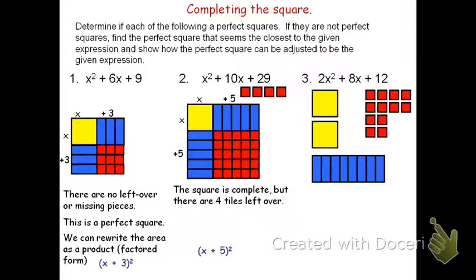However, it's not a perfect square because we do have those leftover pieces, which means we'll have to adjust the expression. I see that we have 4 tiles left over, so after the quantity (x + 5)², we'll just put +4. x² + 10x + 29 can be rewritten as the quantity (x + 5)² + 4.